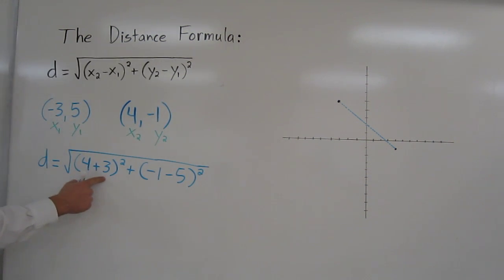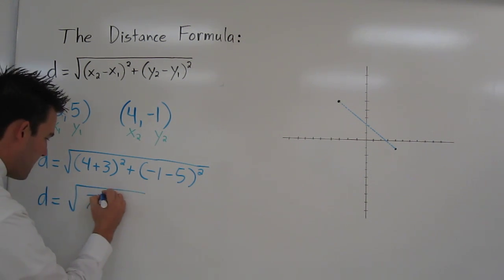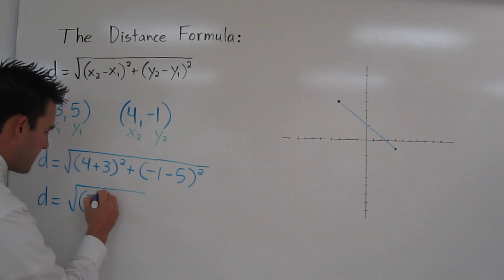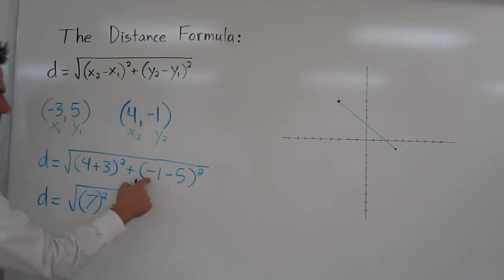4 plus 3 is 7. And negative 1 minus 5 is negative 6.